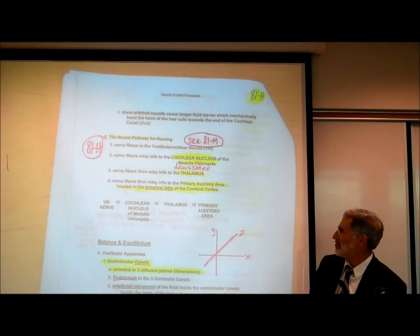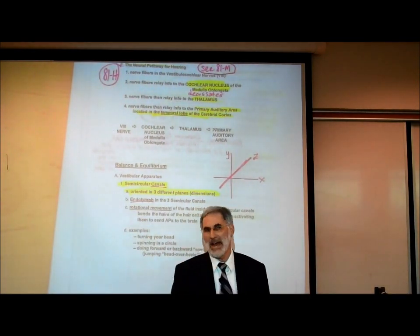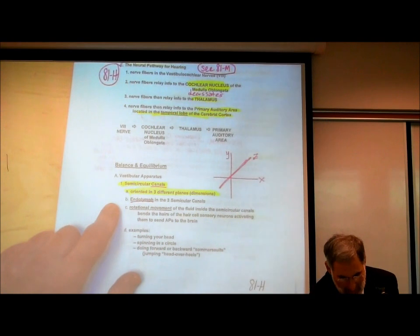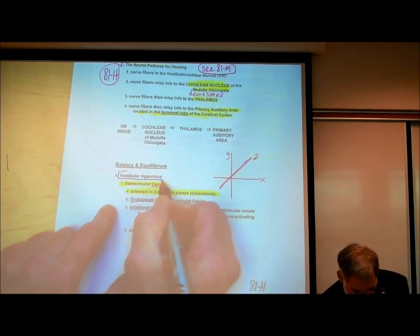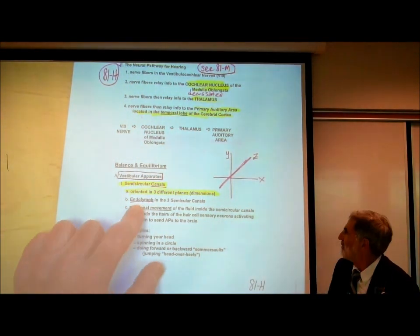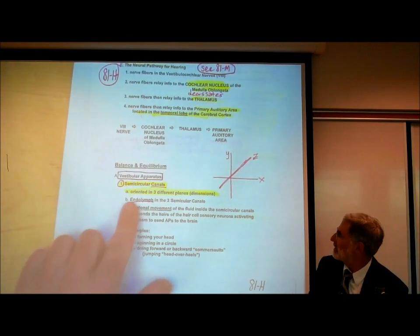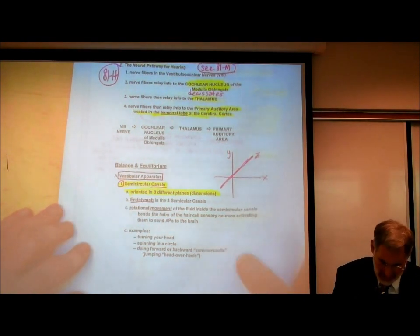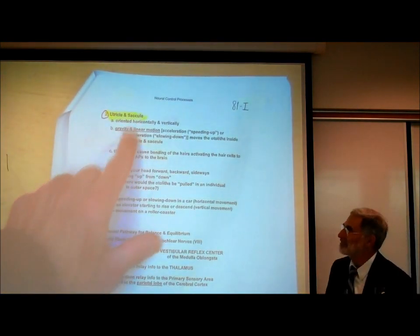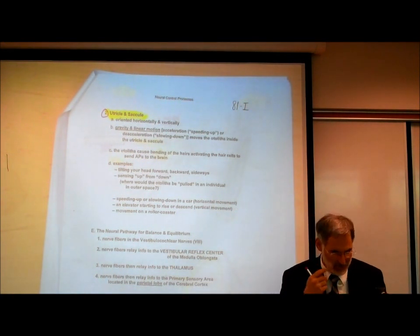Let's give you an introduction to balance and equilibrium. The structure associated with balance and equilibrium is the vestibular apparatus. The vestibular apparatus consists of two main structures: the semicircular canals, and the utricle and saccule. There are a lot of strange words in both the structures for hearing and the structures for balance and equilibrium.